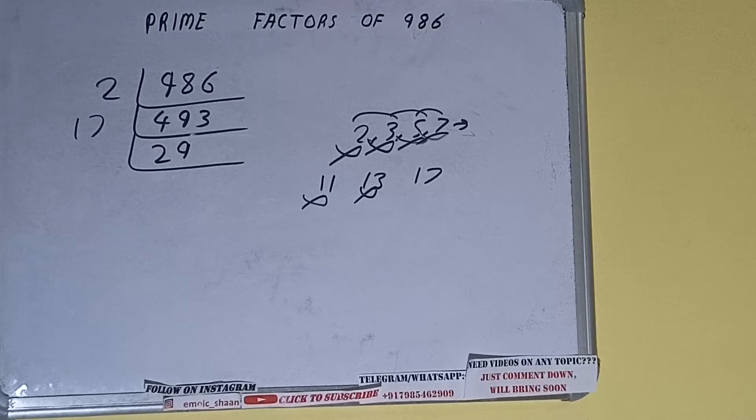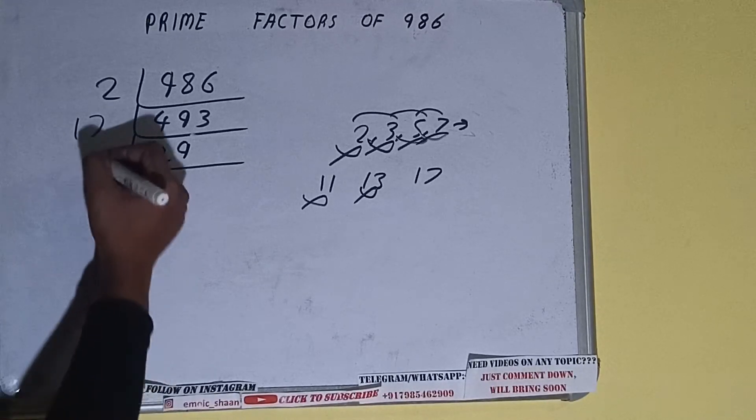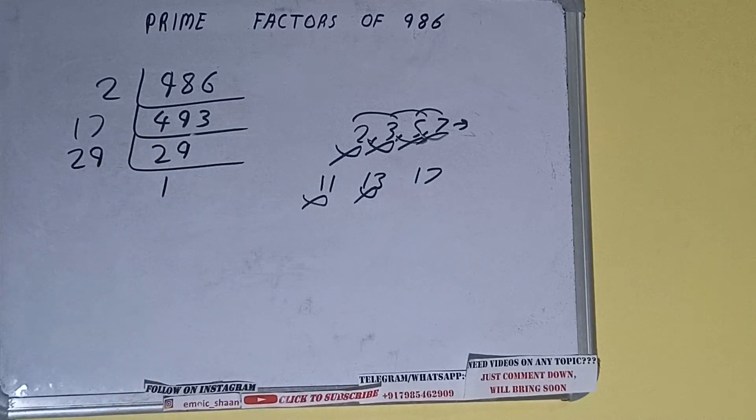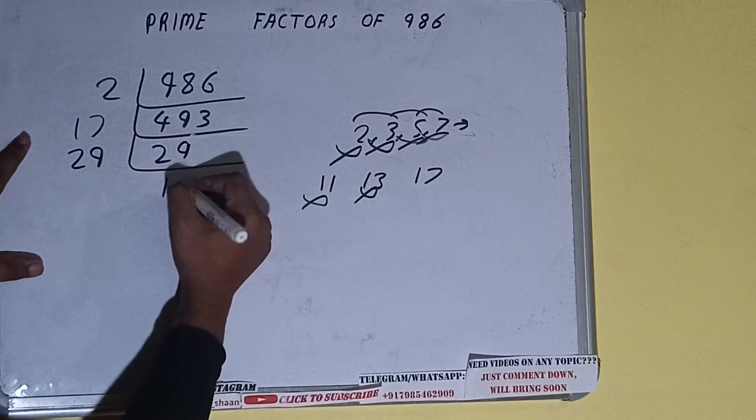Twenty-nine is also a prime number, so it is only divisible by itself, that is twenty-nine, and one. Once we do so, we'll be getting one. Once we get one, we need to stop.